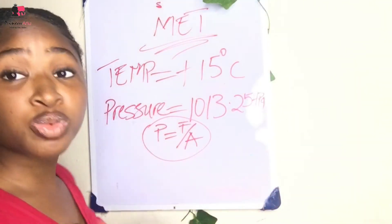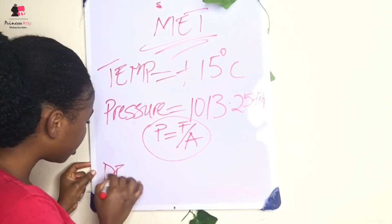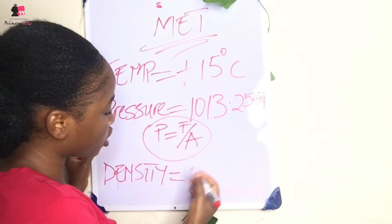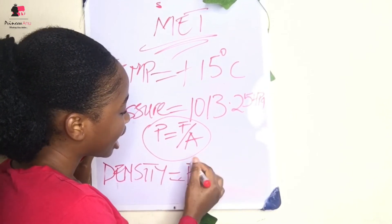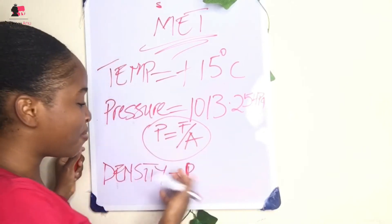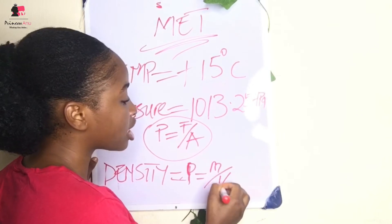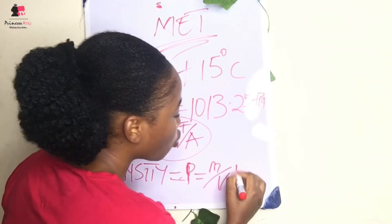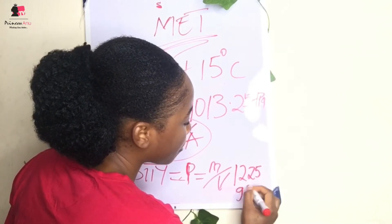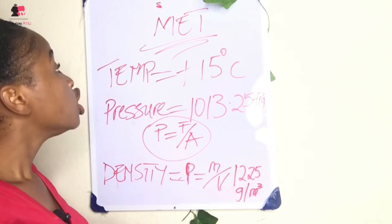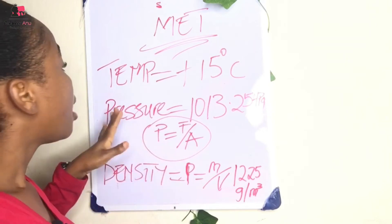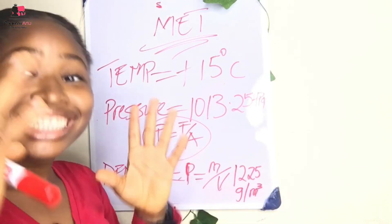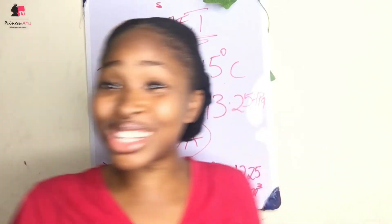Under these parameters we also have density, which is mass per unit volume. The formula for density is mass per unit volume — sometimes written in a rho-style format. The EASA standard mean sea level density is 1225 grams per meter cubed. So to summarize: mean sea level temperature is plus 15 degrees Celsius, pressure is 1013.25 hectopascals, and density is 1225 grams per meter cubed. These figures come up constantly in aviation — you can't do without them.